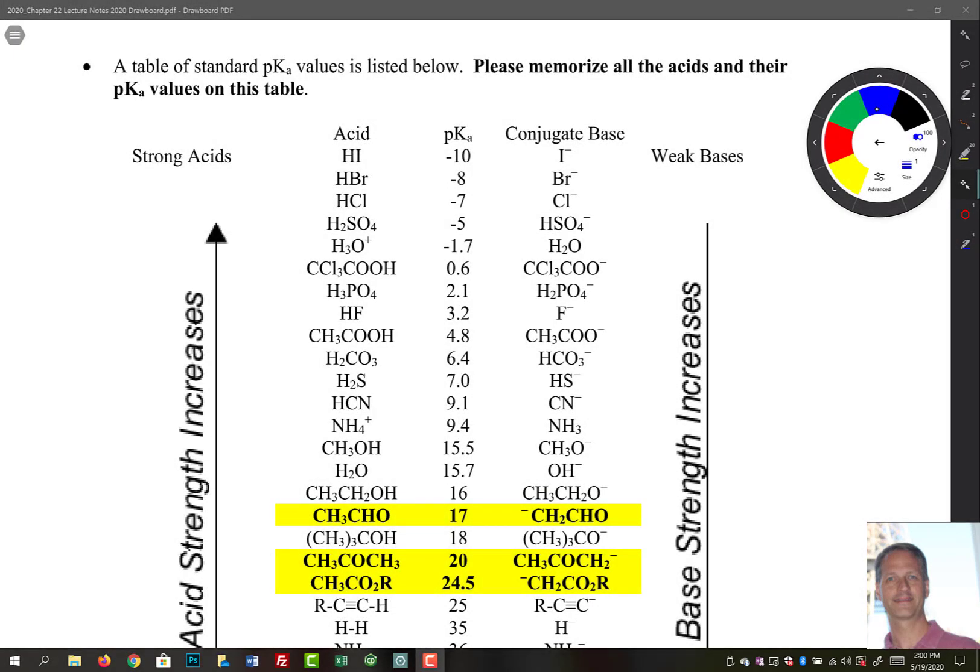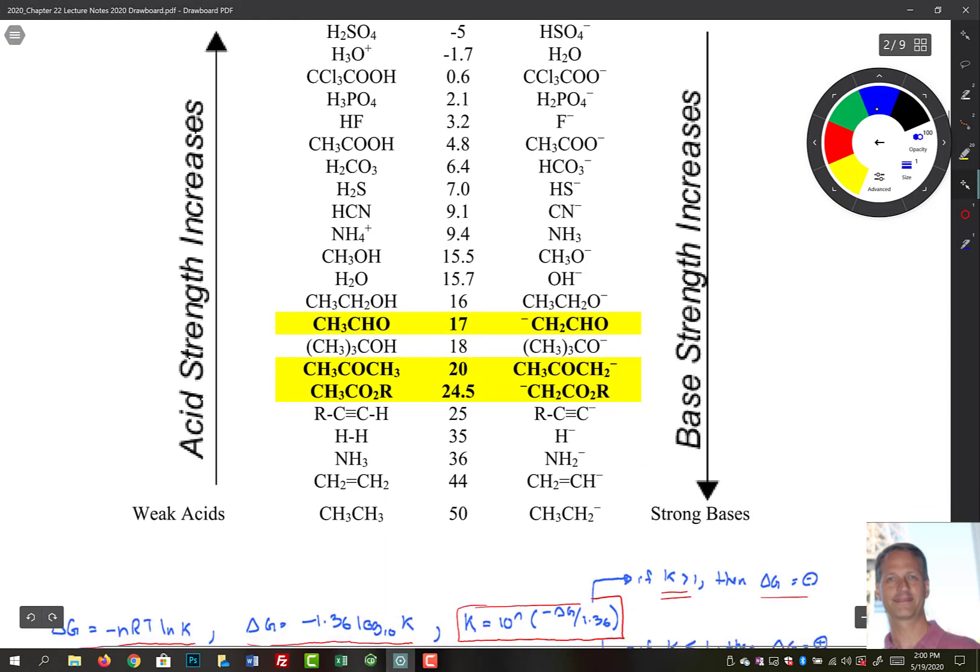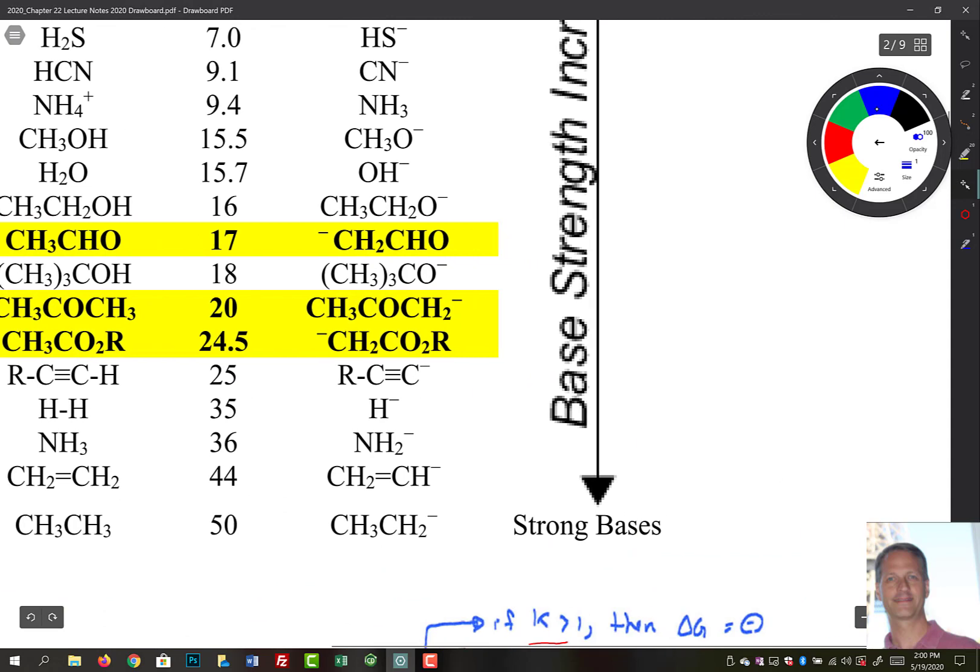So here we have a table listing a lot of the common pKa's of various acids that we've seen through the semester. If we zoom down here and take a look in the middle, we'll see the three main compounds that we're going to be looking at in this chapter.